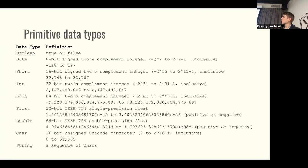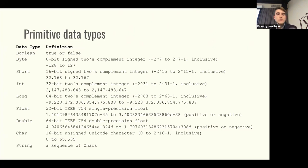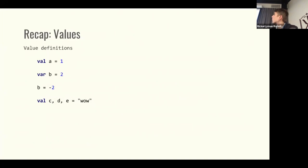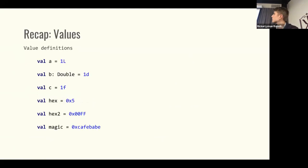Speaking about primitive types in Scala, this is pretty obvious stuff. There is a standard set of primitive types: Boolean, Short, Int, and so on. One thing worth mentioning is that String is a sequence of chars — it's treated in Scala as a sequence of chars. This is a quick recap on how we define values and variables. You can also assign one value to multiple variables at once.